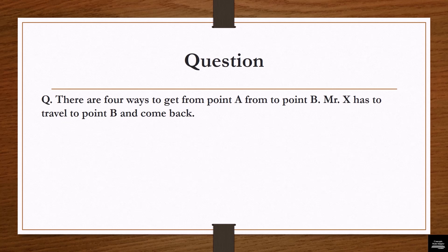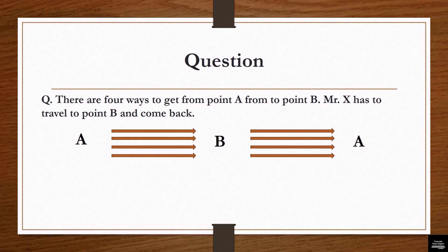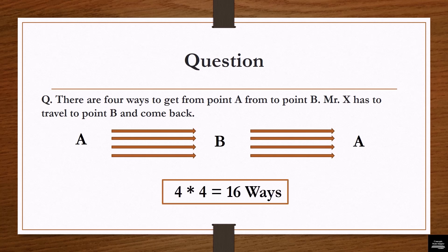The next question is: there are four ways to get from point A to point B. Mr. X has to travel from point A to point B and come back. In how many ways can he do that? The solution is: the person travels from A to B in four different ways, and from B to A it again has four different ways. So the simultaneous occurrence of both events is 4 × 4 = 16 ways.